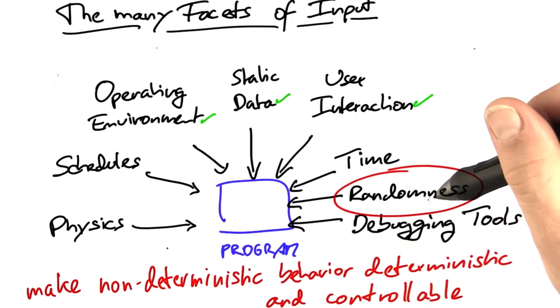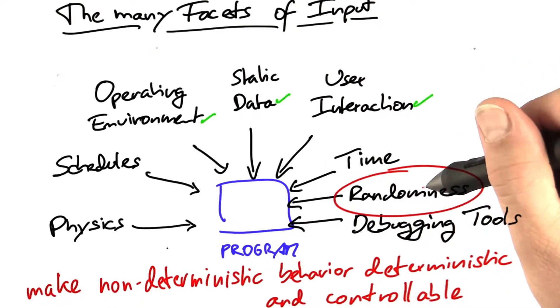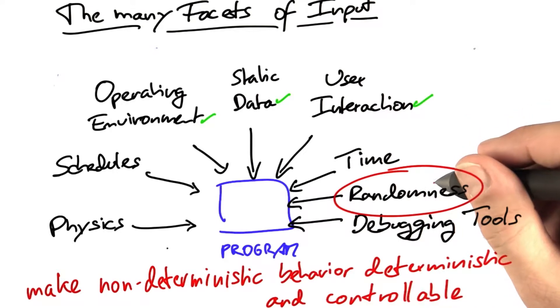Second, randomness. If your program has planned non-deterministic behavior, for instance if you're building a game, ensure that you can reproduce this at will.